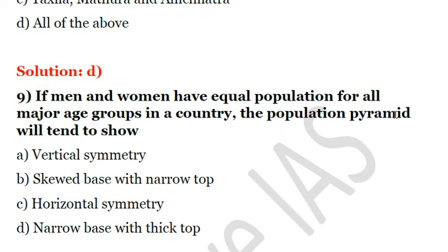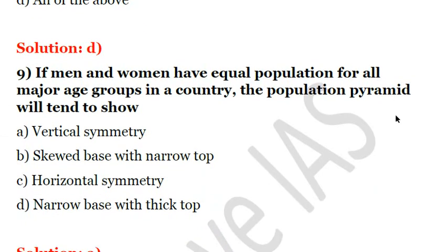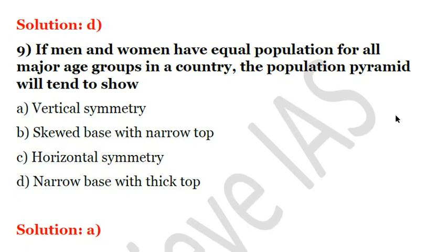Next question: if men and women have equal population for all major age groups in the country, the population pyramid will tend to show — A, vertical symmetry; B, skewed base with narrow top; C, horizontal symmetry; D, narrow base with thick top. If men and women are equal in every age group, the population pyramid will show vertical symmetry. The answer is A.